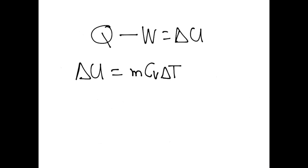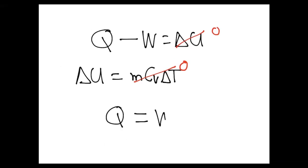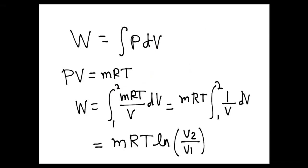Since the temperature does not change, this tends to zero, and the first law is Q equals W. Such that the heat is going to be mass times constant times temperature times natural logarithm of V2 over V1.